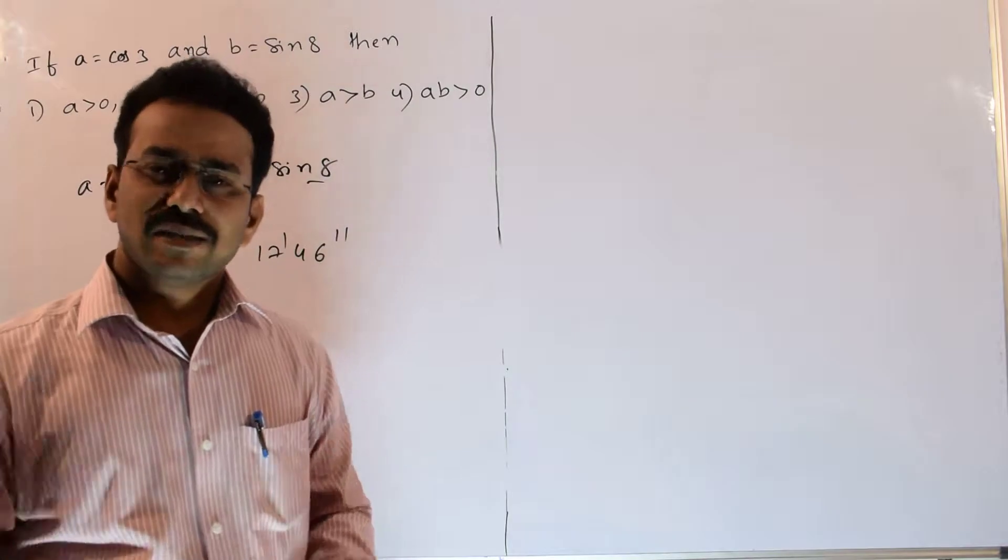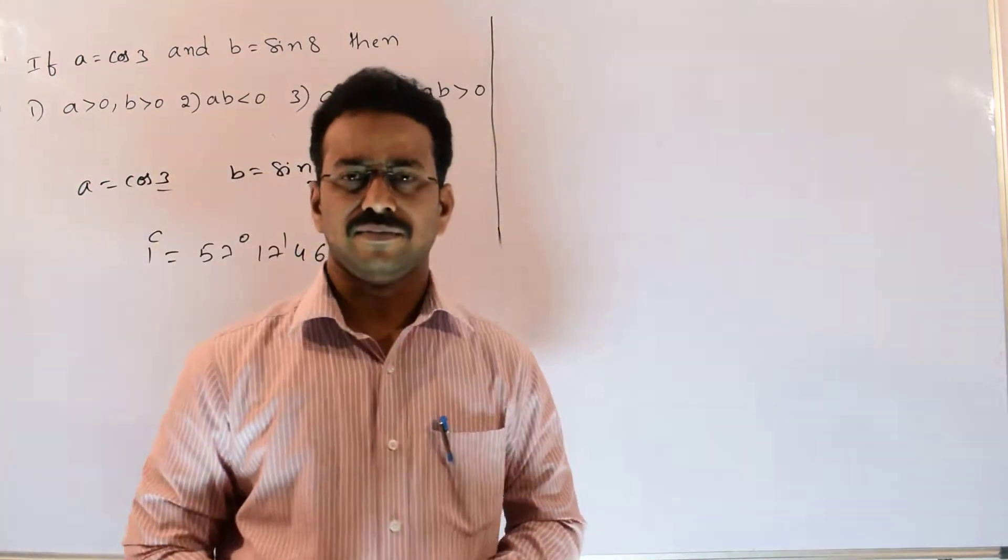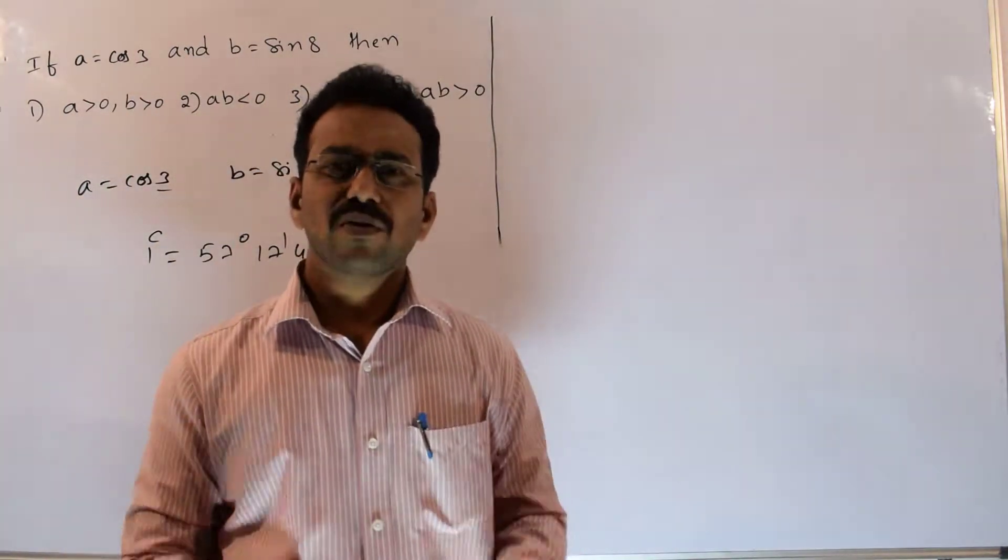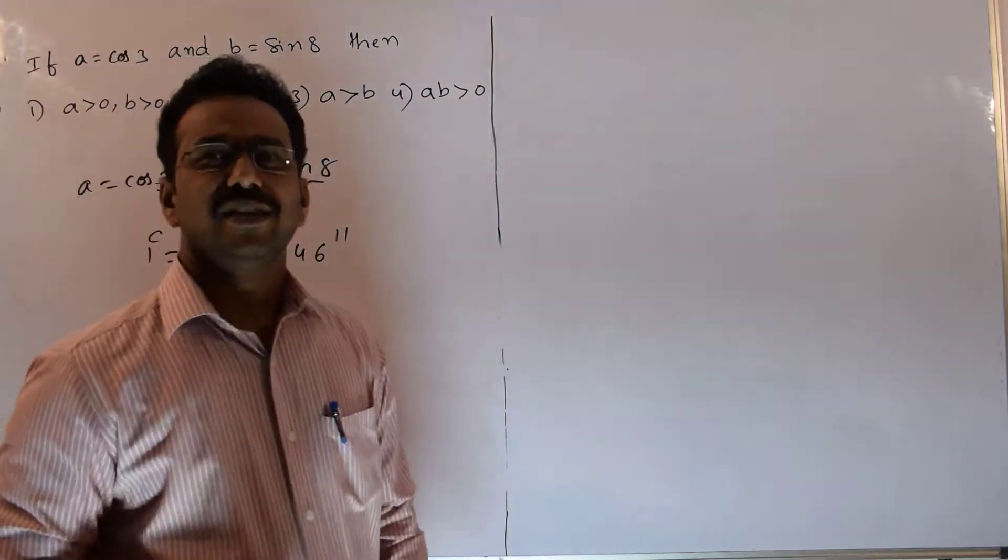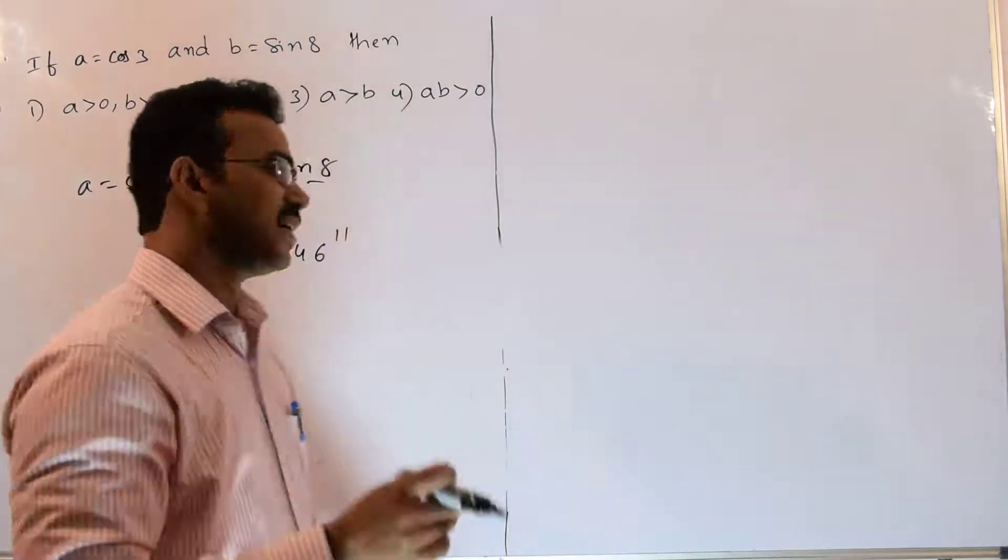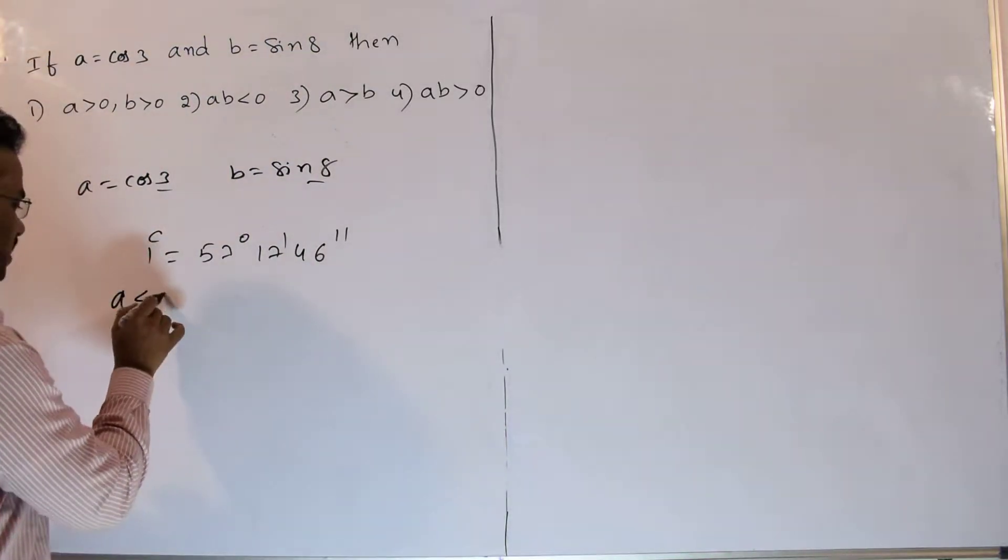See 174 degrees belongs to second quadrant. So in second quadrant there is a cos 3. Cos 3 means cos is always negative. So A is less than 0.